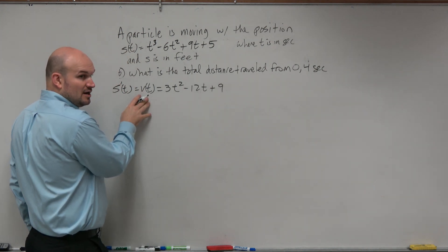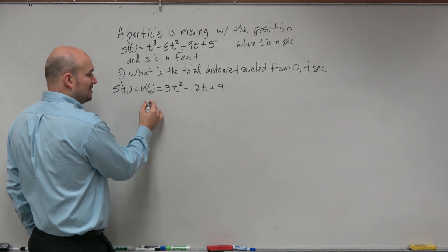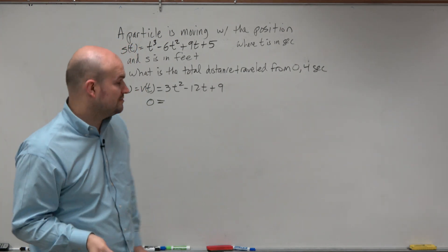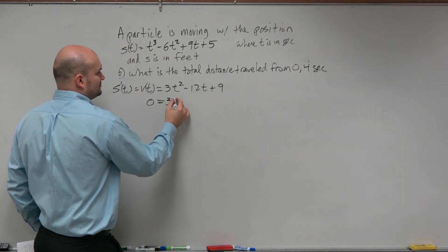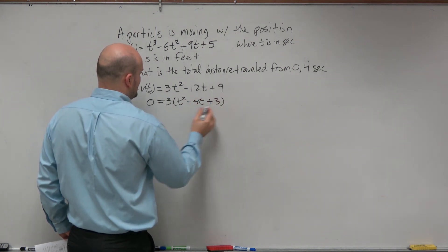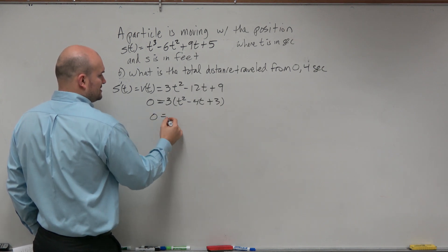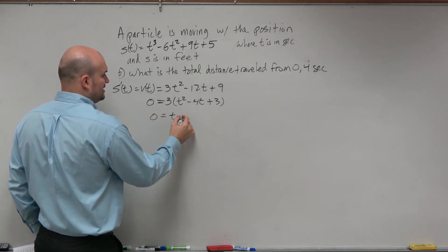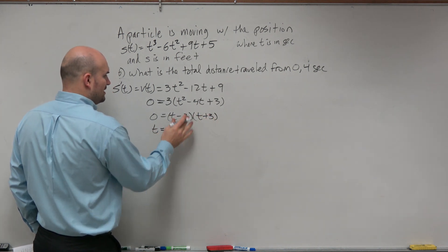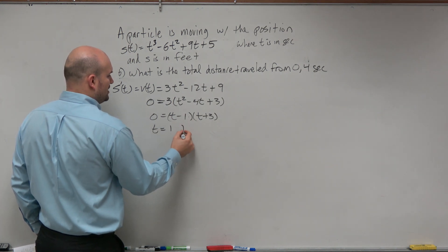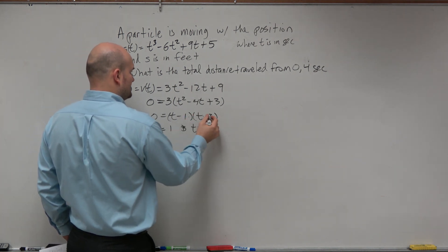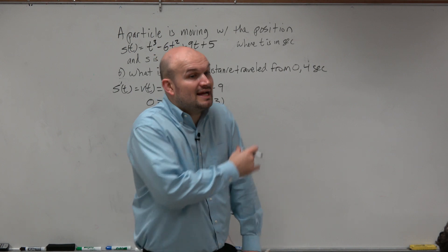We want to set this equal to zero and find where it's going to be changing from positive to negative, where those changes are. I'll factor out a 3 here, so I get t² - 4t + 3. Divide out the 3, and then I can factor this out. What two numbers multiply to give me 3? That's going to be t - 3 times t - 1. At t equals 1 and at t equals 3, the particle is potentially changing direction.